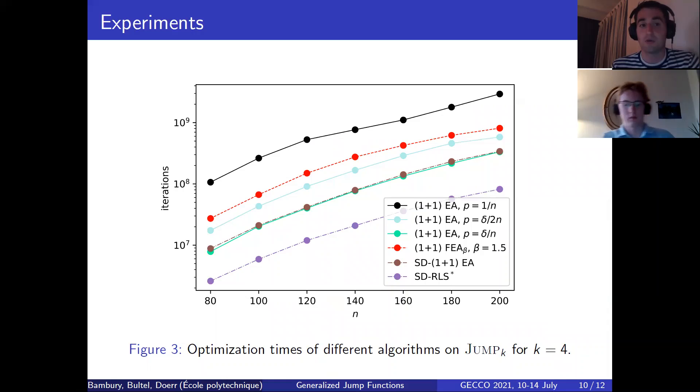Because for example, if somebody were to use evolutionary algorithms to solve a problem in industry, just referring to the literature on Jump_k, they would probably choose SD-RLS*, which could be, in fact, a very bad idea.